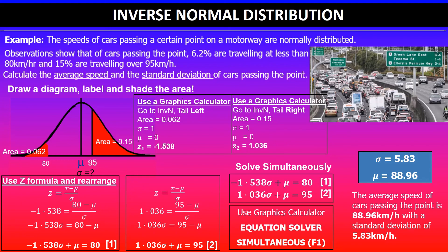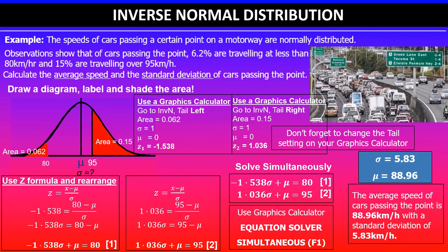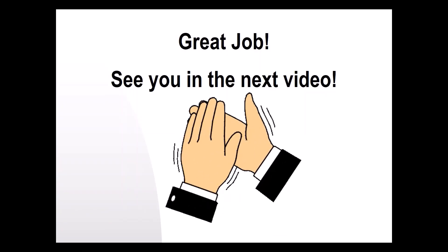I suggest pausing the video and trying this yourself. Note the tail settings on your graphics calculator carefully — be vigilant. If either the mean or standard deviation or both are unknown, use the z-score formula to find the z-values, rearrange, and solve simultaneously. Do not forget to change the tail settings, as using the wrong setting will give you the wrong z-value and hence the wrong final solution. Thanks for watching — see you in the next video.